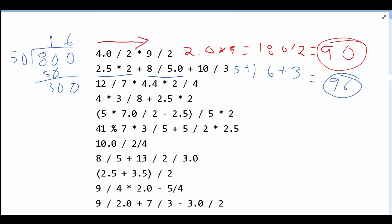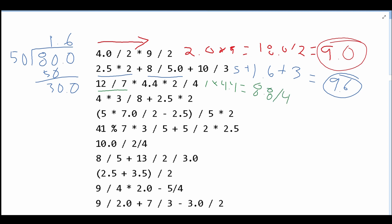That is the answer for the second problem. Next, we have 12 divided by 7, which gives us 1. This is being multiplied by 4.4, giving us 4.4. It is then being multiplied by 2, so we have 8.8. And then we divide this by 4, which gives us 2.2.